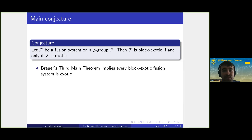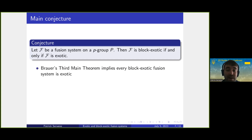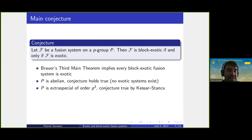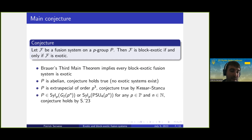We only need to worry about one implication because Puig's third main theorem implies every block exotic fusion system is exotic. So we only need to show: exotic implies block exotic. If P is abelian, the conjecture is true because there are no exotic fusion systems. If P is extraspecial of order p³, the conjecture is true by Kessar-Stancu. If P is a Sylow p-subgroup of G_2(p^n) or PSU_4(p^n) for any prime p and natural number n, I recently proved the conjecture also holds.